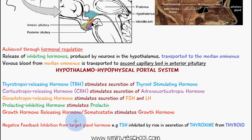There is also negative feedback inhibition from the target gland hormone. For example, thyroid-stimulating hormone is inhibited by a rise in the secretion of thyroxine from the thyroid.